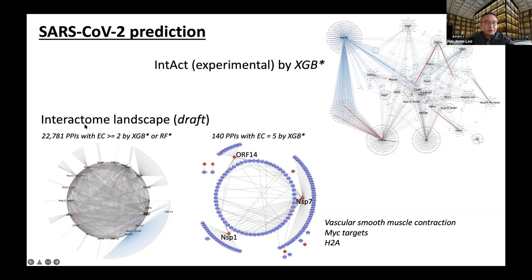Second, we applied the classifiers to all pairwise combinations — more than half a million pairs — between 27 SARS-CoV-2 proteins and about 20,000 human proteins. I'm showing a subset of 22,000 PPIs with evidence class at least two, predicted by either the best XGBoost or the best random forest. There is also another subset of 140 PPIs with the highest evidence class predicted by XGBoost. Based on this interaction network, we observed that many interacting human proteins are enriched in muscle contraction pathways and cytoskeletal components.